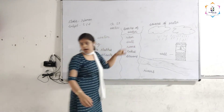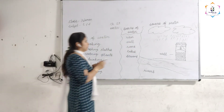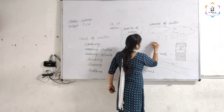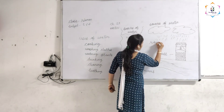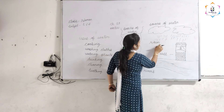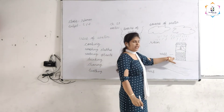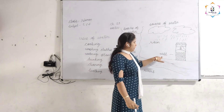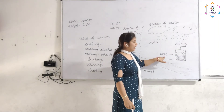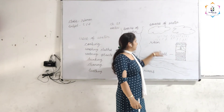Rain spelling: R-A-I-N. Rain. Next is well: W-E-L-L. Well.